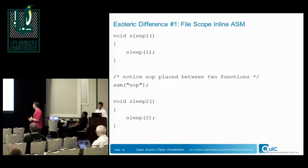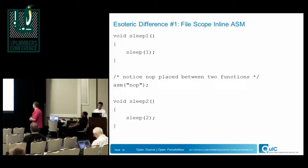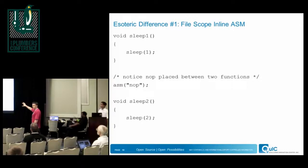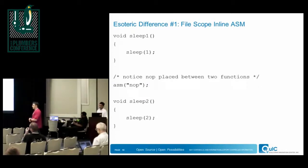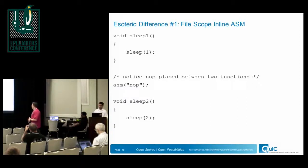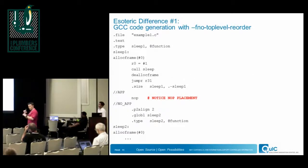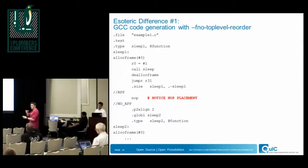The user space has more esoteric issues, and a lot come from glibc. Here's a boiled-down test case of a feature called global inline assembly — inline asm at file scope, not inside a function. With GCC, using the -fno-toplevel-reorder flag, you get guaranteed ordering: a no-op in inline asm will go in between the two surrounding functions, respecting the source ordering.